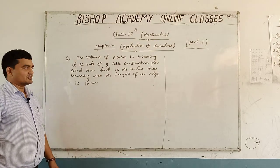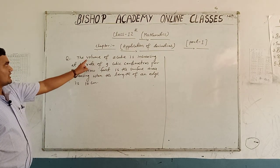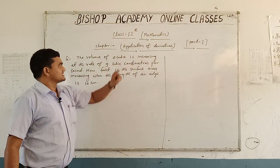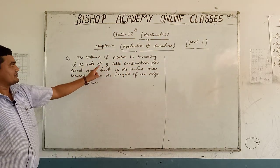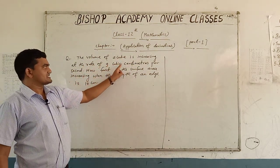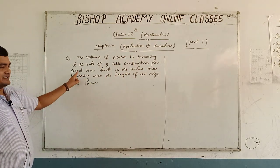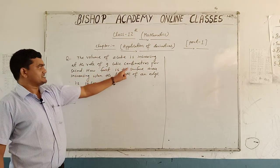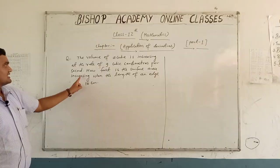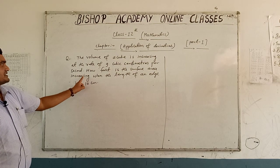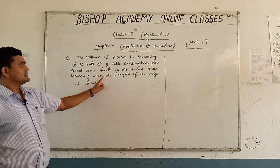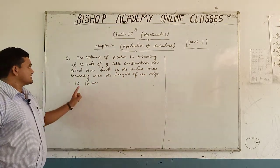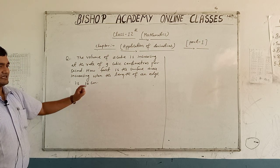Next question: The volume of a cube is increasing at the rate of 9 cubic cm per second. How fast is the surface area increasing when the length of an edge is 10 cm?